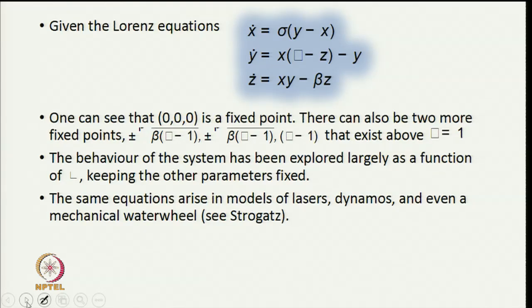Given the Lorenz equations, x dot equals sigma(y - x), y dot equals rx - y - xz, and z dot equals xy - beta z with parameter r or rho, you can immediately see that x = 0, y = 0 and z = 0 is a fixed point. The origin is a fixed point, but there are also two other fixed points at plus or minus square root of beta times (r - 1), and these will only exist above the value of r = 1.